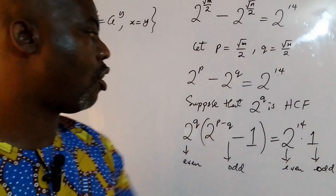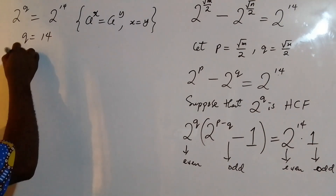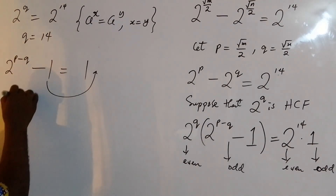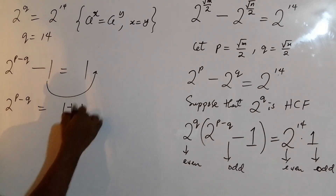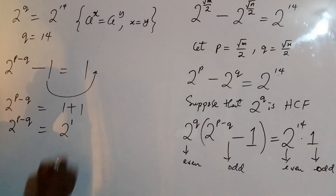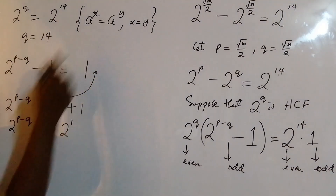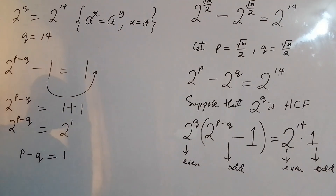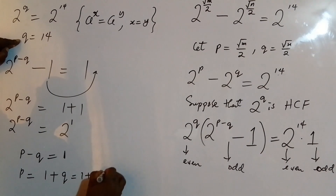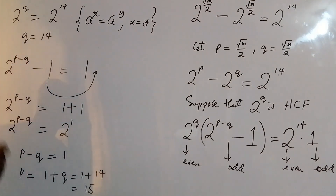Comparing the odd parts, we get 2 to the power of p minus q, minus 1, equals 1. So 2 to the power of p minus q equals 2, which is 2 to the power of 1, meaning p minus q equals 1. Therefore p equals 1 plus q, which is 1 plus 14, giving us p equals 15.